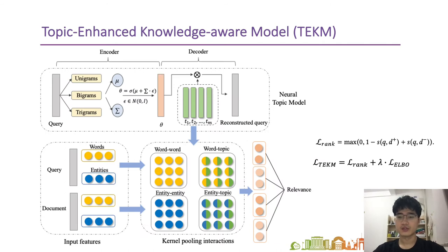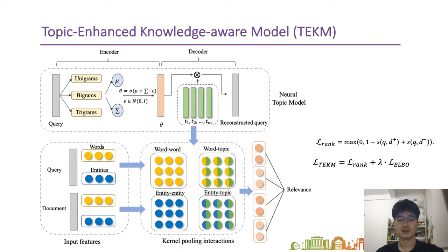The workflow of our framework contains two components: a neural topic model that learns topic information from the query and generates weighted topic embeddings for further matching, and a topic-enhanced matching framework that combines semantic similarity, knowledge relevance, and topical relatedness for learning to rank. Semantic similarity is captured by word-to-word matching, and knowledge relevance is captured by entity interactions. Topic embeddings are used to match word embeddings and entity embeddings. The learning target contains two parts: a pairwise ranking loss function, and the learning function for the neural topic model.